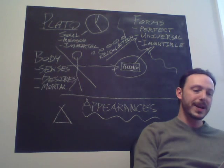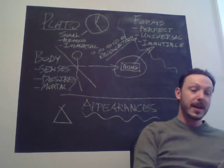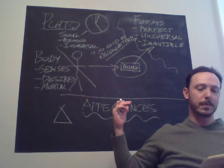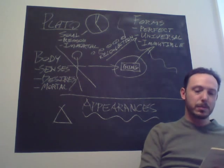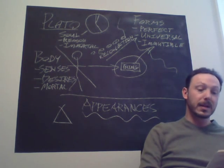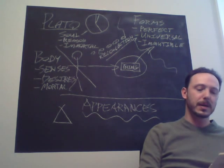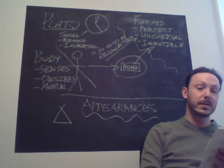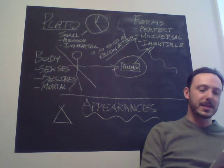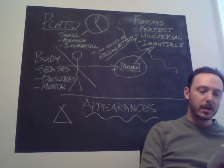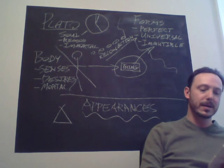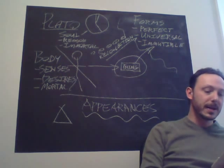Now, beauty, as I said, was radiant among the other objects, and now that we have come down here, to the realm of the appearances, we grasp it sparkling through the clearest of our senses. Vision, of course, is the sharpest of our bodily senses, although it does not see wisdom. It would awaken a terribly powerful love if an image of wisdom came through our sight as clearly as beauty does, and the same goes for other objects of inspired love. But now, beauty alone has the privilege to be the most clearly visible and most loved.